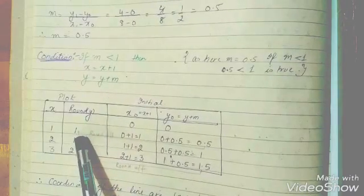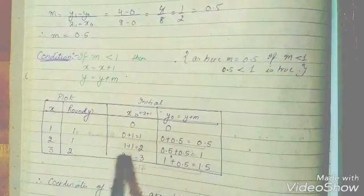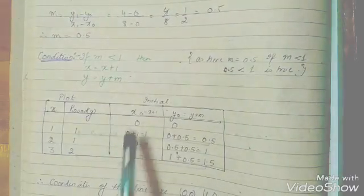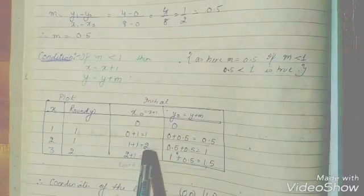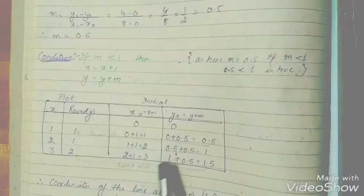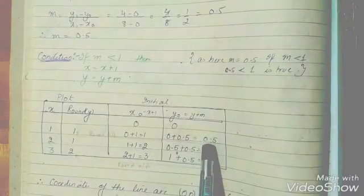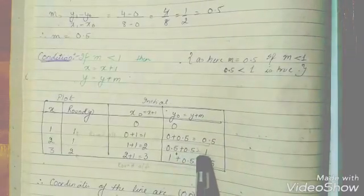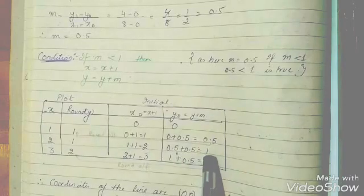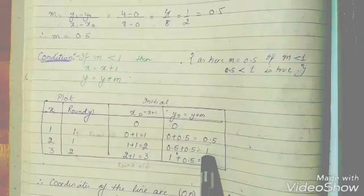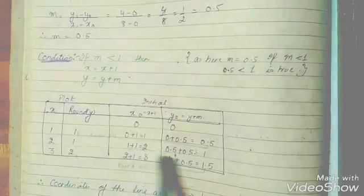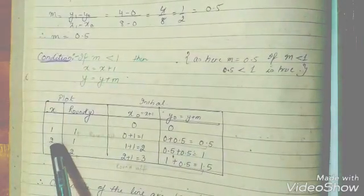So to calculate the next value of X and Y, we take the previous value of X, 1, and increment it by 1, we come up with 2. In the same way, we take the previous value of Y which was 0.5, we add M to it which is 0.5, we come up with 1 after adding them up. So in this case, our pixels are becoming 2 and 1. So we write it over here, 2 and 1.